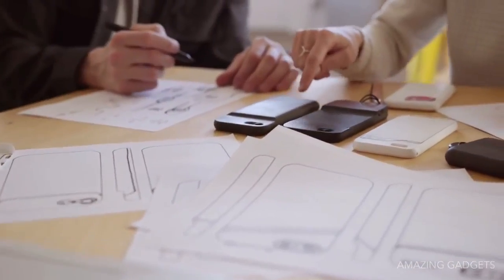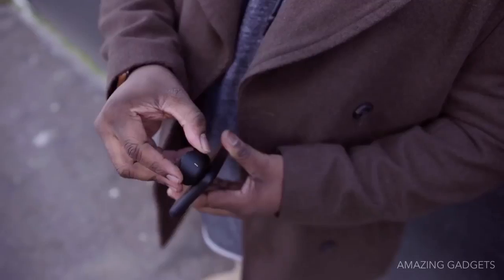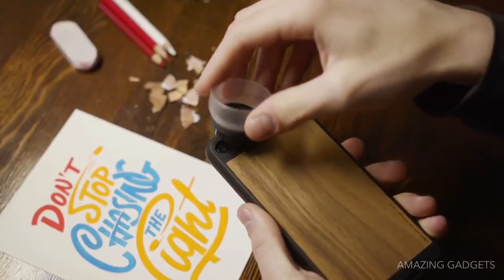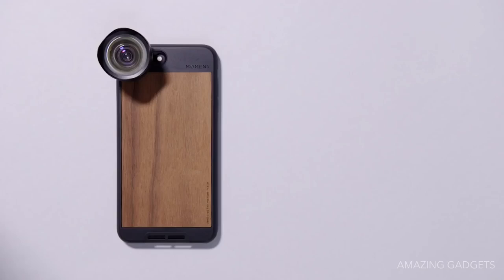With a redesigned lens interface, you can now rotate and click a Moment lens into place. And if you're shooting on the 7 Plus, you can now mount our glass over either lens on the phone, unlocking even more creativity.